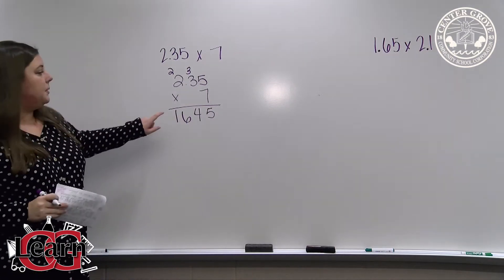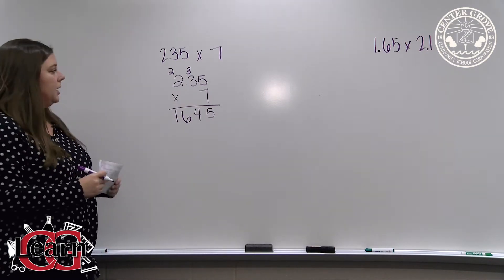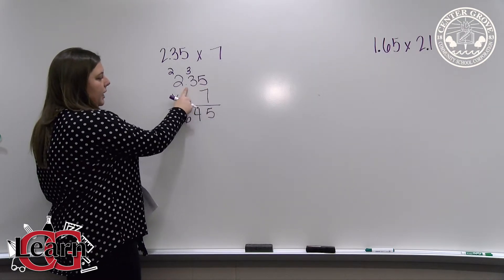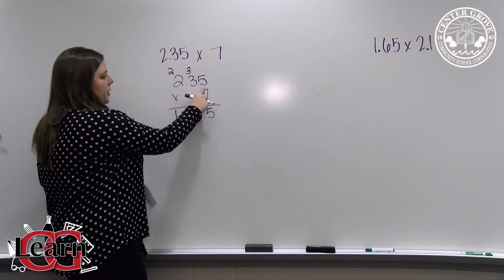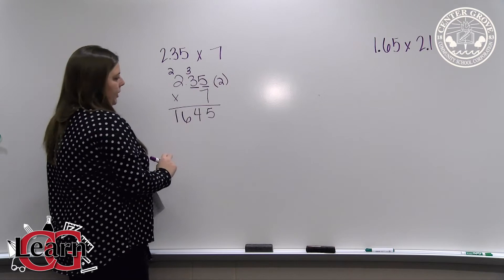The last step is to insert our decimal point into our answer. To do that, we're going to record off to the side the number of digits to the right of each decimal point. So in our first factor, we have one, two digits to the right of the decimal point.